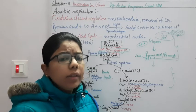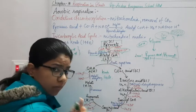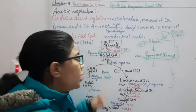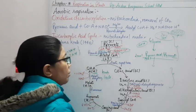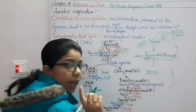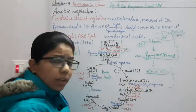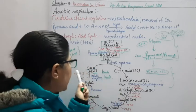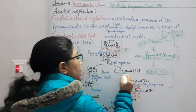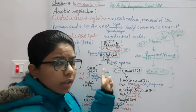In the Krebs cycle, condensation takes place — we are adding the 2-carbon compound (acetyl coenzyme A) to the 4-carbon compound (oxaloacetic acid). When a 4-carbon compound combines with a 2-carbon compound through condensation, we get a 6-carbon compound. The first product of this condensation between oxaloacetic acid and acetyl coenzyme A is citric acid, which is a 6-carbon compound.